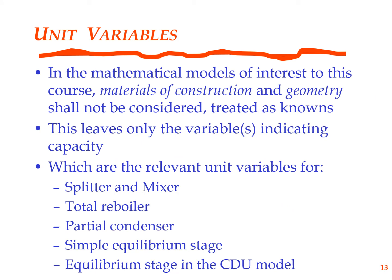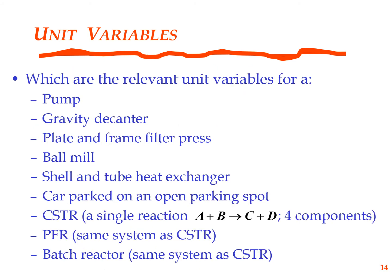In the mathematical models of interest to this course, materials of construction and geometry shall not be considered — they will be treated as knowns. This leaves only the variables indicating capacity. Can you think of what is the capacity for a partial condenser? A condenser is typically some form of heat exchanger — what is the variable that indicates the capacity? What about the capacity of a pump, a filter press, a ball mill, or a PFR?